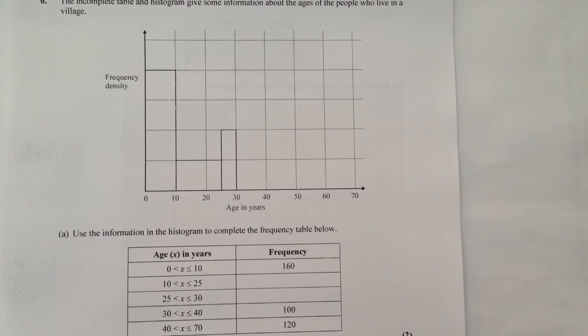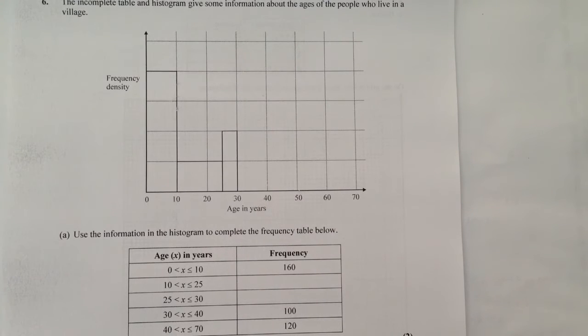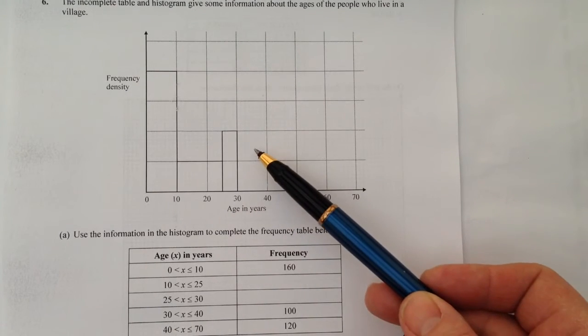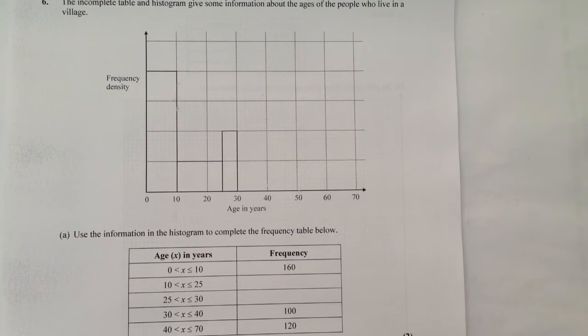OK, so the first thing is, I hope you can see this OK. You'll notice that we've got a couple of missing bars here. We've also got some missing information on the frequency density axis. And we've also got a table here which has got two missing bits in it.